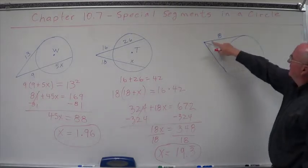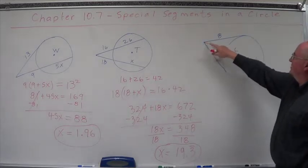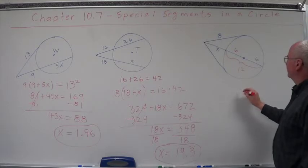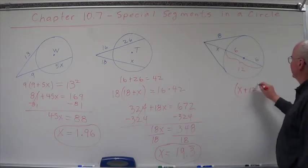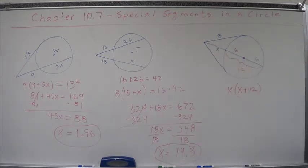So we have a tangent over here, we have 8 squared. And then we have this whole thing, which is going to be x plus 12. So let's start with that. x plus 12, and then we're going to multiply it times its exterior portion, which is going to be x out there.